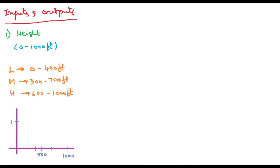For the low membership function, it spans 0 to 400 feet, so I take the maximum value at the midpoint, which is 200. So the triangular MF parameters are 0, 200, and 400. That is how you specify it in MATLAB — 0, 200, and 400. This is the lower membership function.